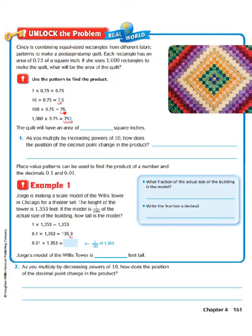Now, if we go back to 1,000 times 75 hundredths, we see that we have 1, 2, 3 zeros in 1,000. So we're going to have to move our decimal place three places to the right. We can add a 0 to the end of 0.75, and that will allow us to move our decimal place one, two, three places to the right. So 1,000 times 0.75 equals 750. The quilt will have an area of 750 square inches.